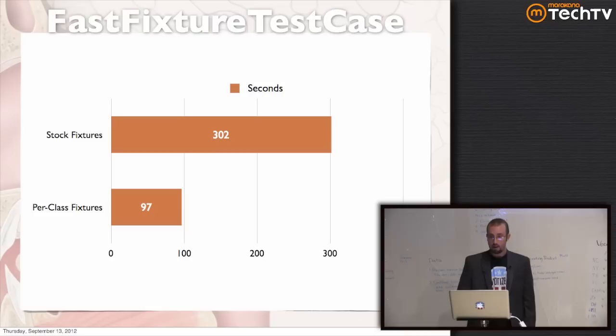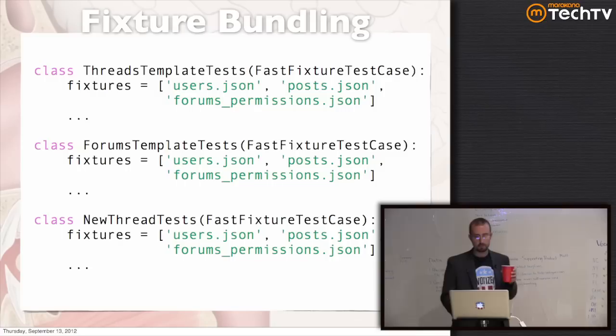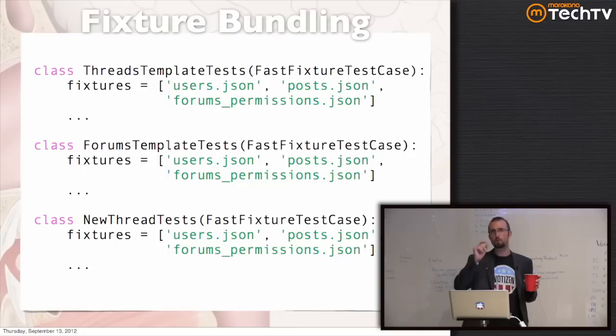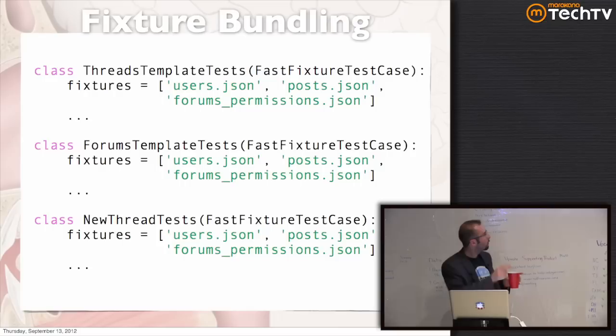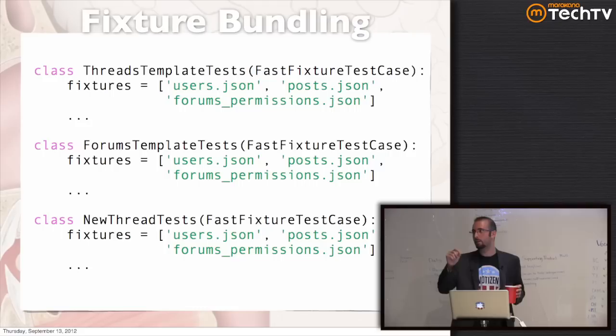You can get these improvements yourself — you just have to subclass FastFixtureTestCase instead of TestCase. One caveat: if you have post-save handlers, you can't do that, but that's something that could be solved and patches are welcome. There was also an additional four seconds saved by reusing a single database connection — Django tends to flap the connection open and closed a lot. That takes us down to 93 seconds.